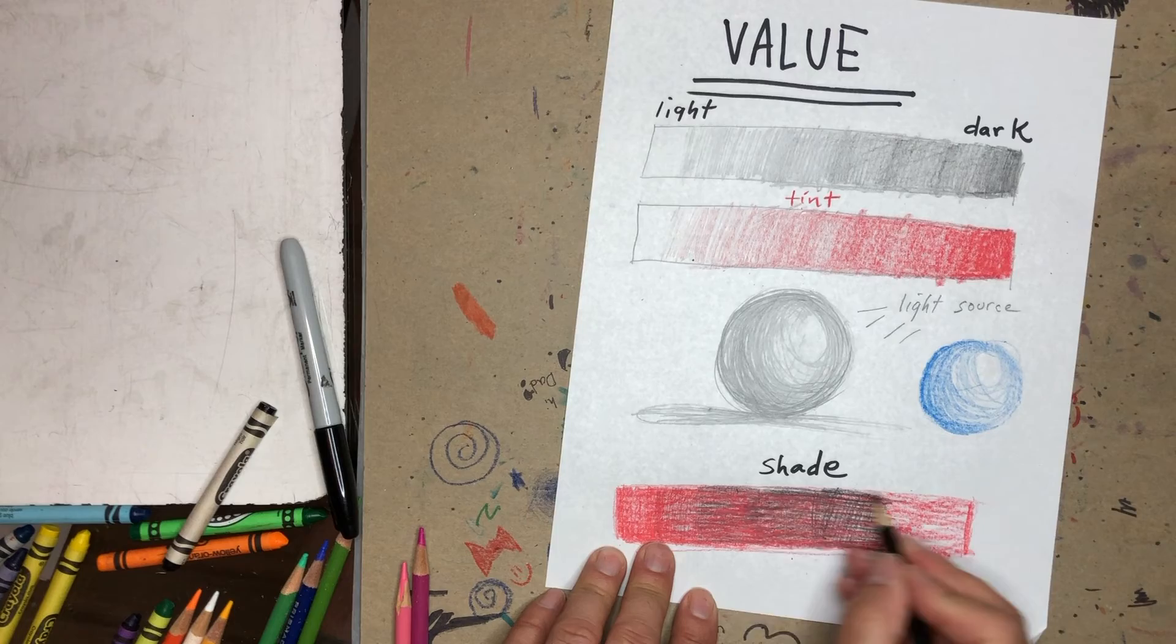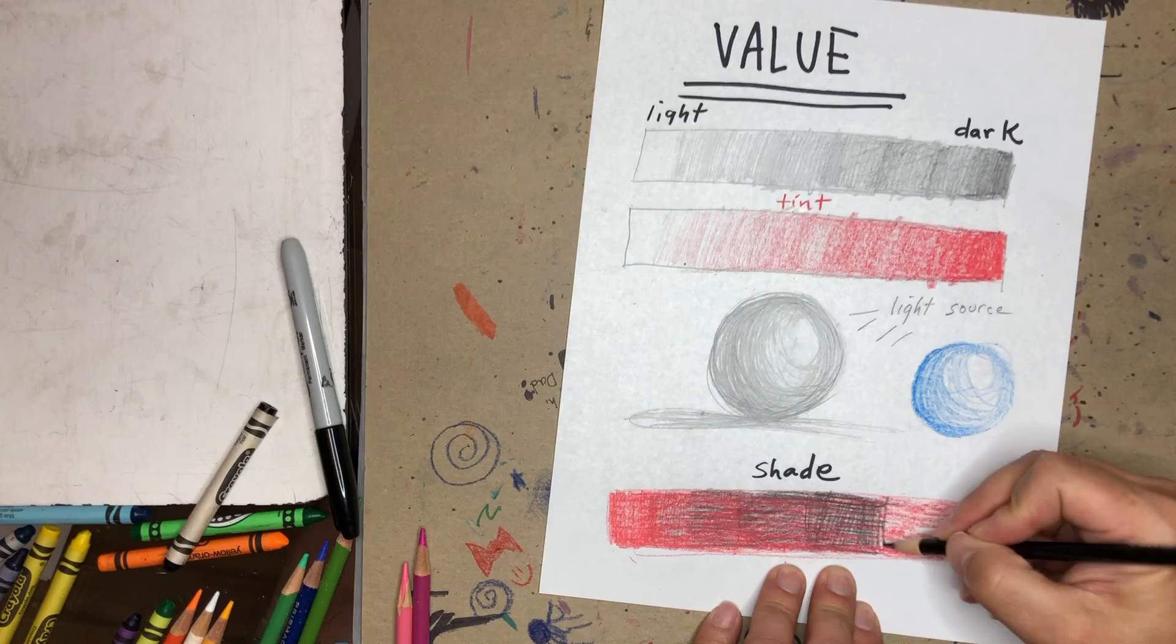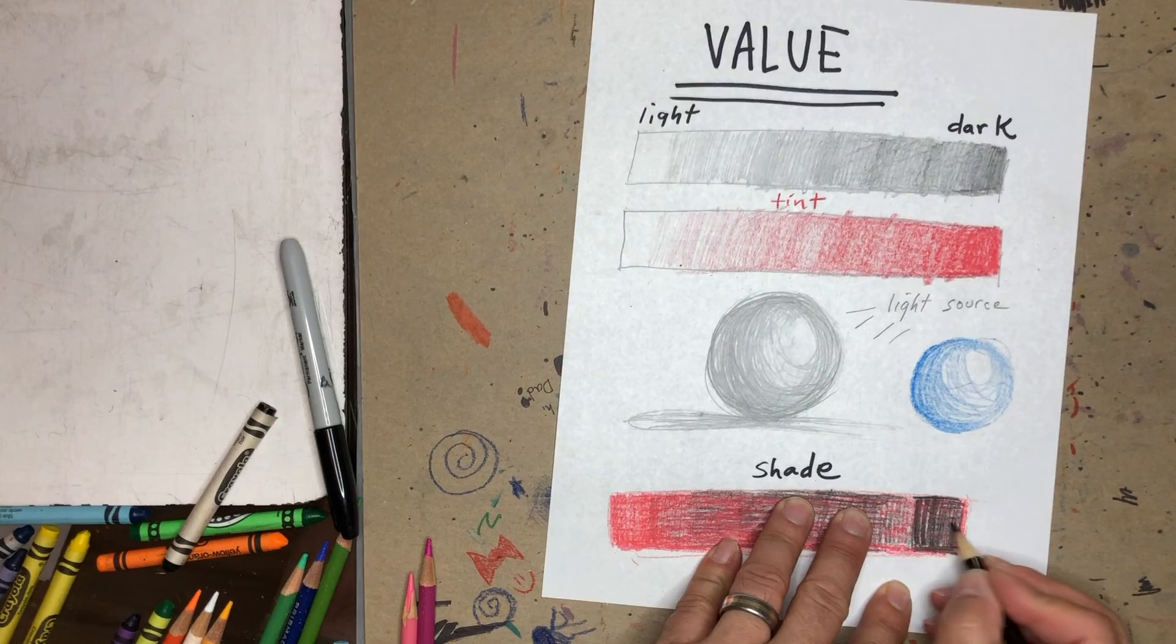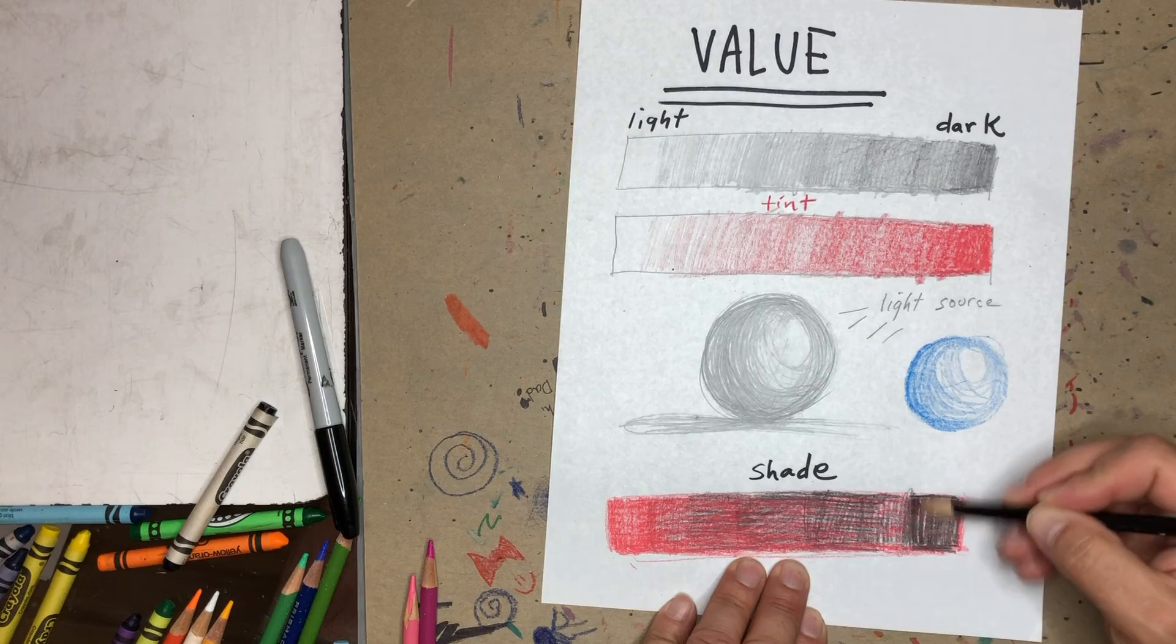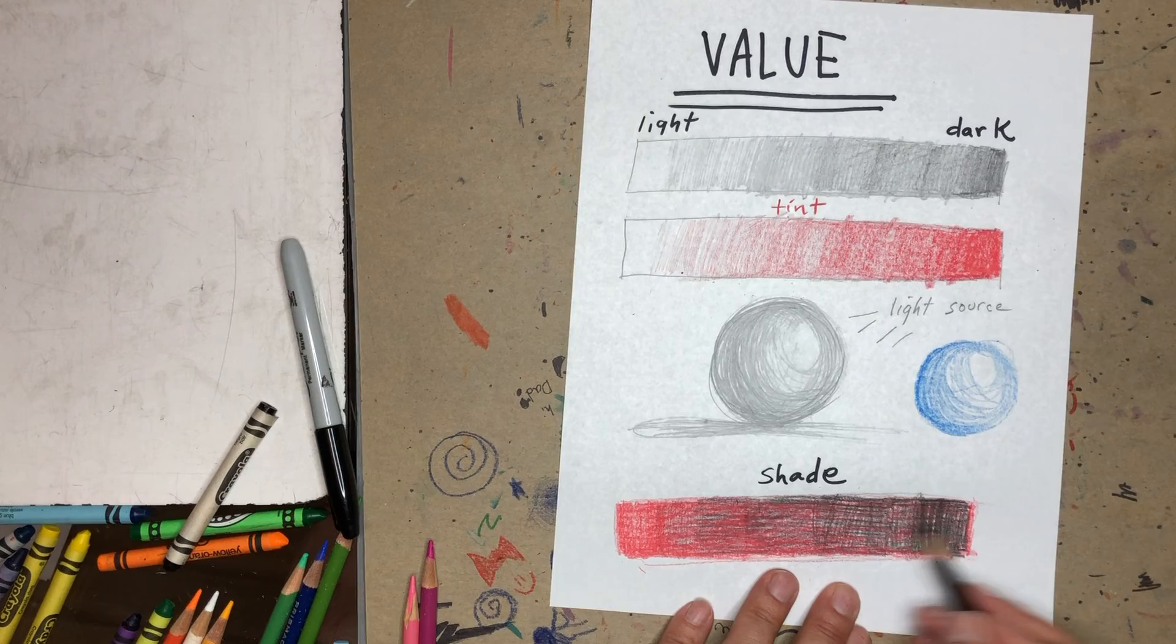And again, we would be mixing black to the red and achieving it that way if we were able to use paints. But again, this is just to show you the darkness of a color and the range of value. Now, I don't want to leave that line in there, so I'm going to blend it so that it's more gradual. And that would represent a shade.